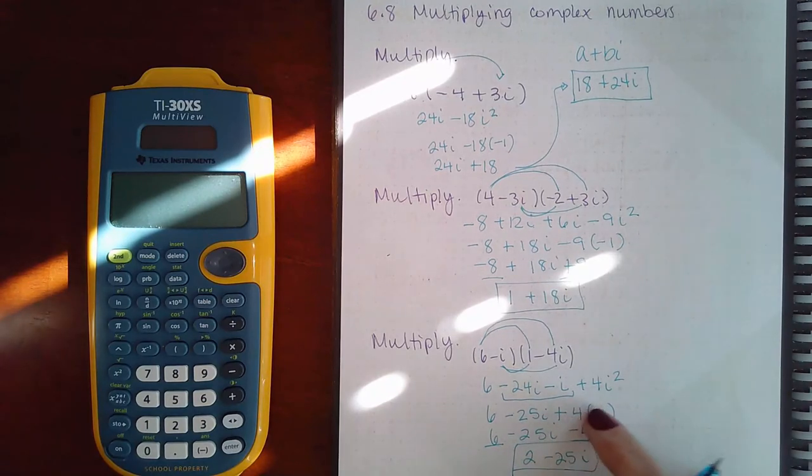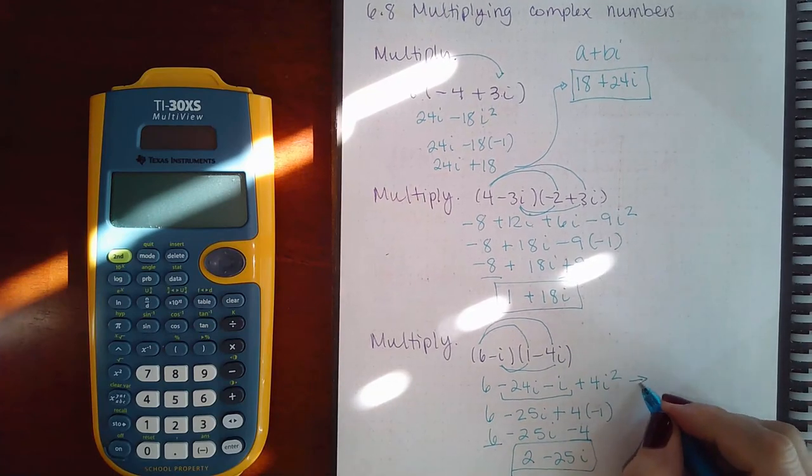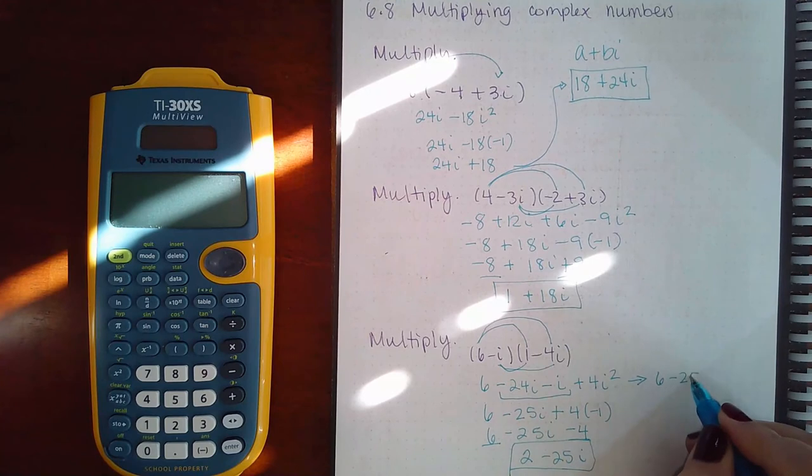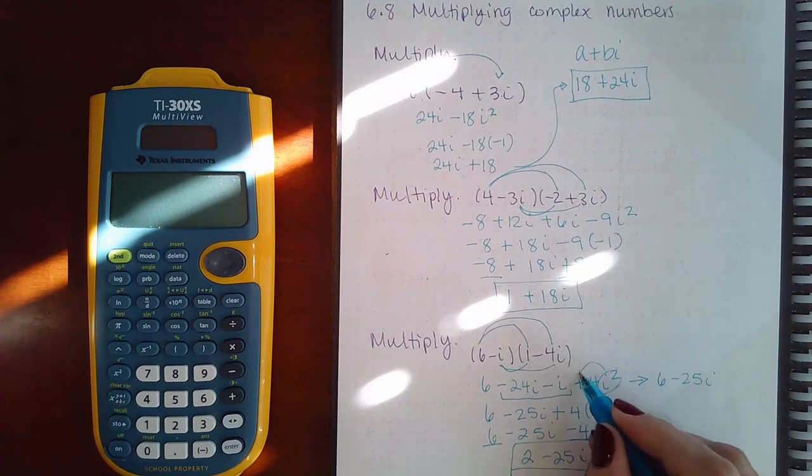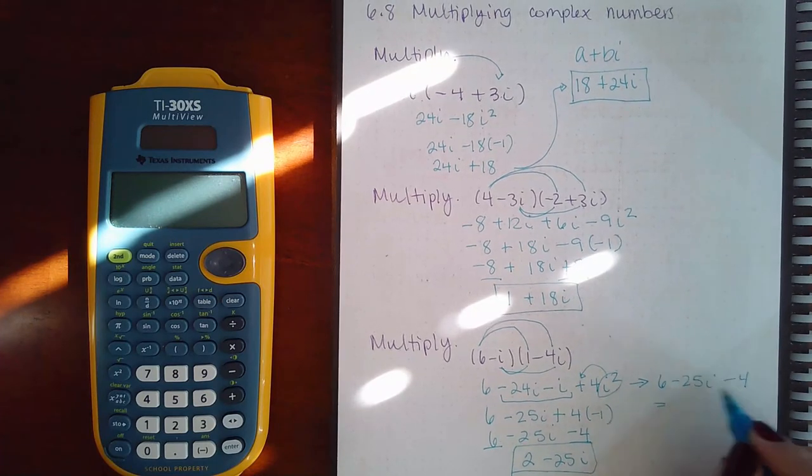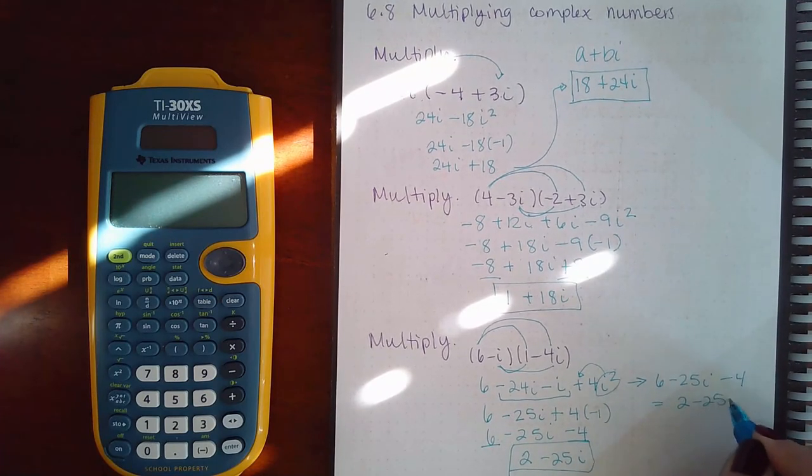I usually don't write this step. I go straight from this step to this step. So you might see me say 6, those two together make minus 25i, this i squared is going to change that sign so it becomes negative 4, and then I combine those and I have my final answer.